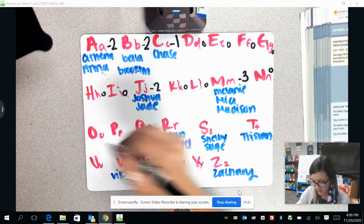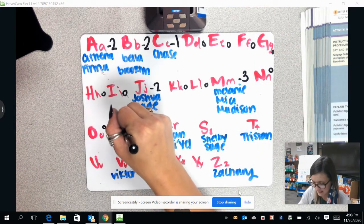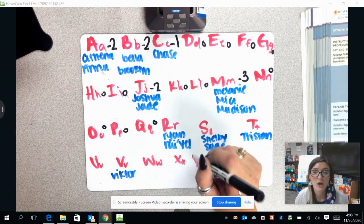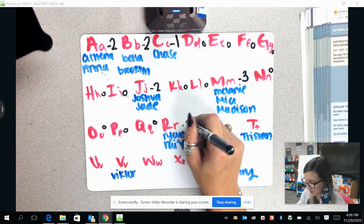Letter N is zero. O is zero. P is zero. Q is zero. For letter R, we have Ryan and Rael. That's two people for letter R.